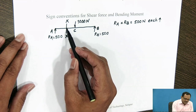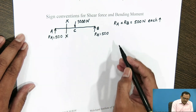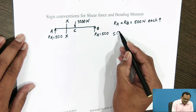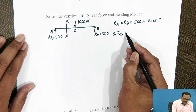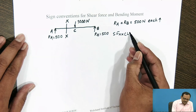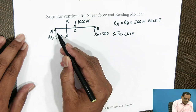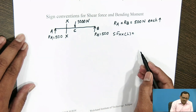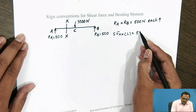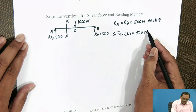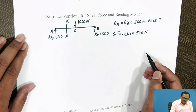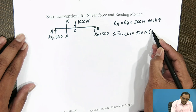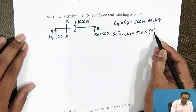When you consider the left side of the section, the Shear Force at section XX acting to its left side has only reaction R_A acting vertically upward. So, Shear Force at section XX to the left side is 500 N acting vertically upwards.